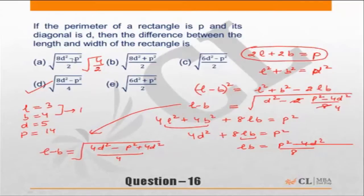Now if I know 8D square minus P square is 4, so 4 by 4 is going to be 1. Right. So you can actually adopt such kind of method where you can put values and check the answer.